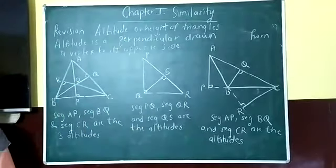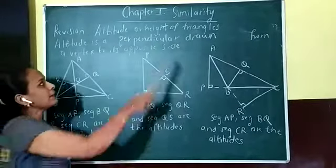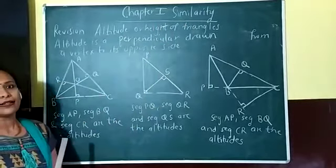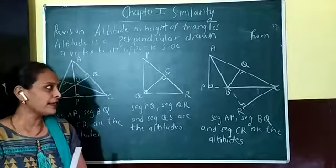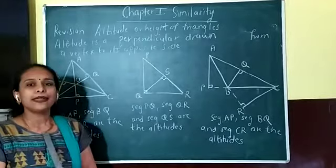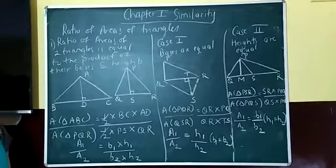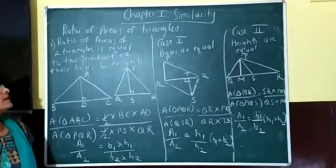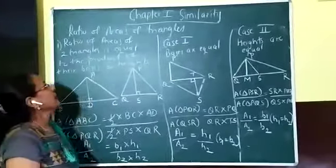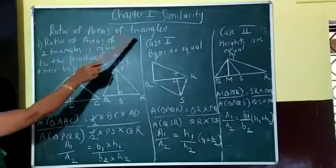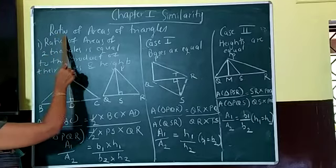After learning what the altitudes are, the next thing we are going to learn is the first concept in this lesson on similarity: ratio of areas of triangles. We are going to learn the property based on ratios of areas of triangles, because the first practice set is based on those concepts. The first concept is about ratio of areas of triangles.